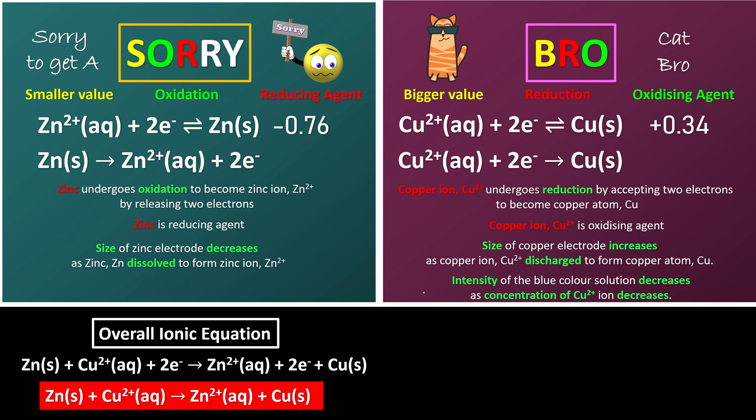But not only that, we are required to learn how to write the cell notations. It's going to be very easy once you know sorry bro. We're going to do sorry bro from left to right. So sorry starts with zinc solid, so we're going to write it down: zinc solid, write down a vertical line, and then go for zinc 2+ aqueous.